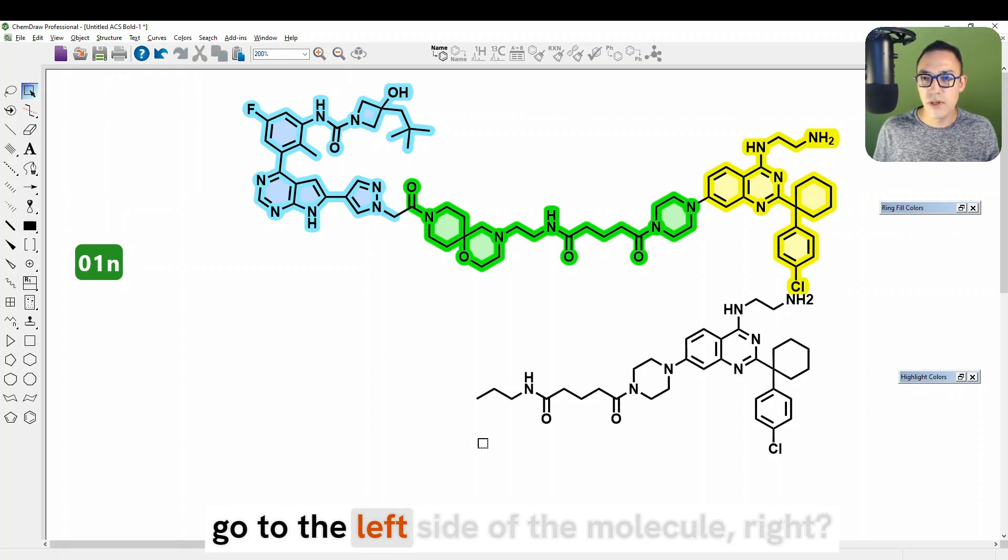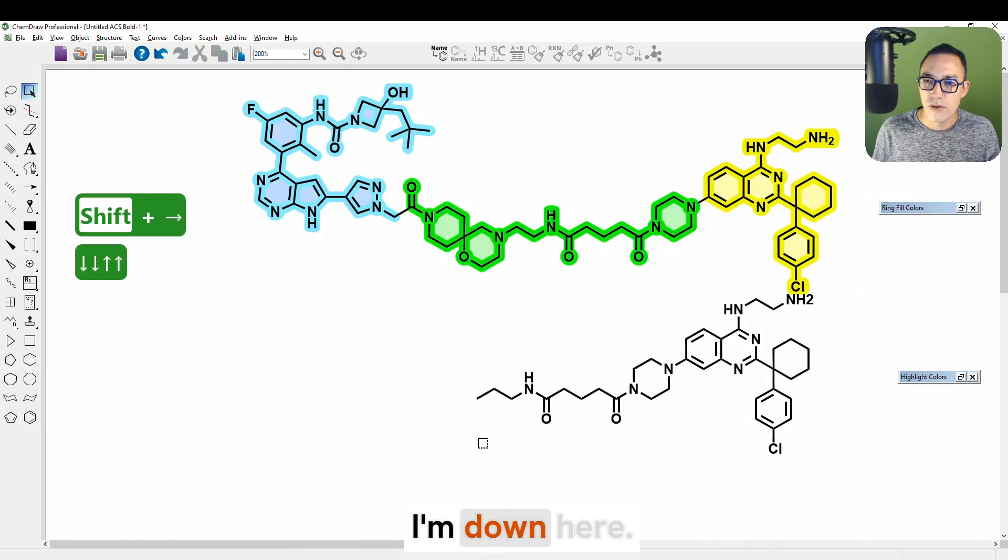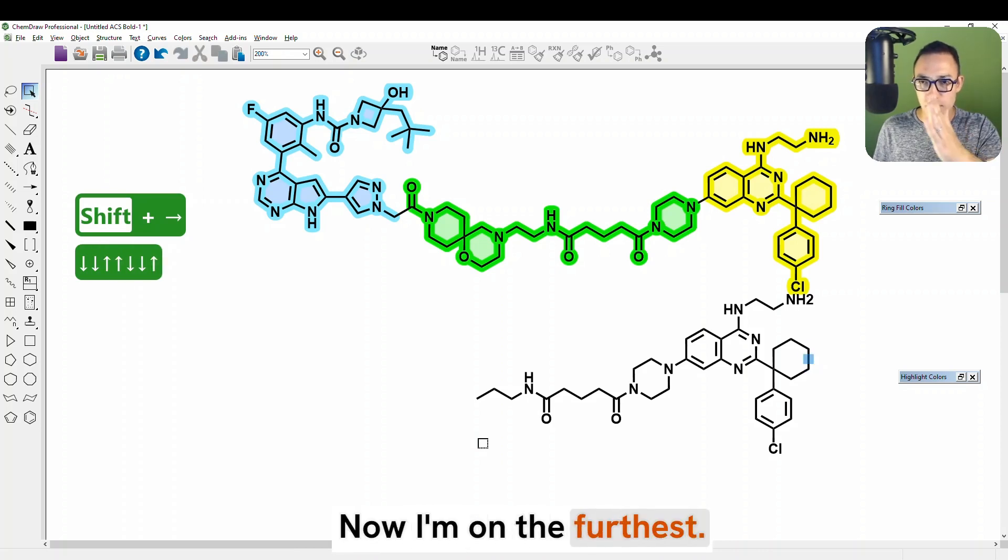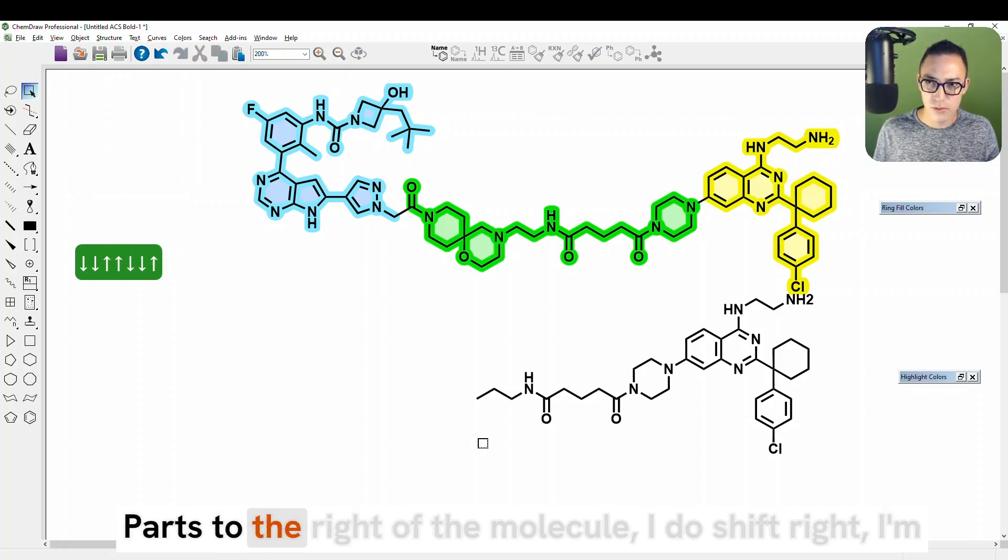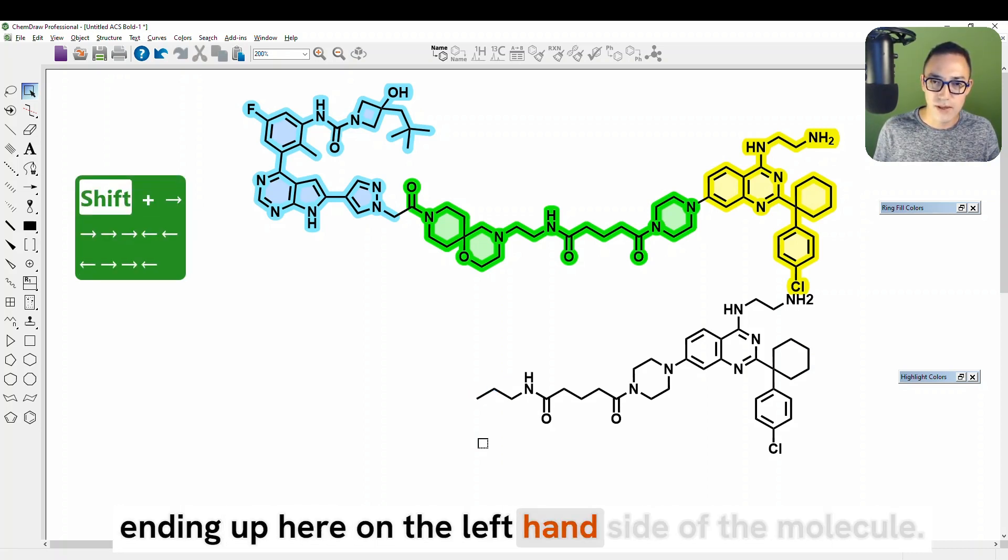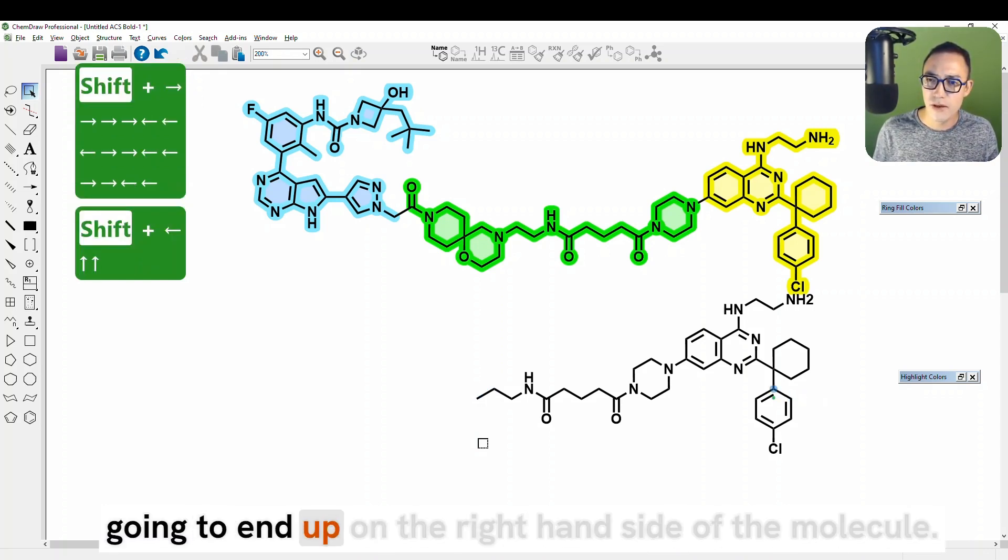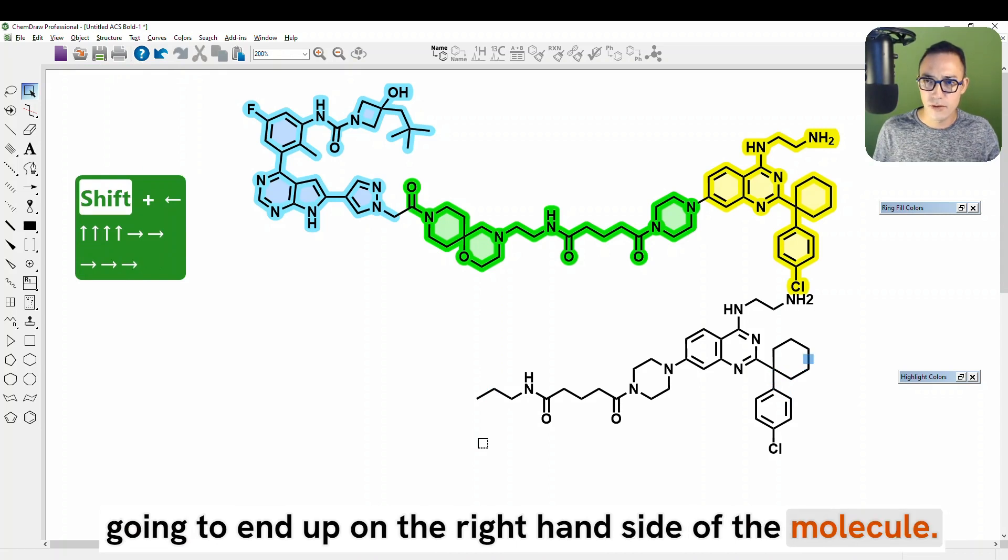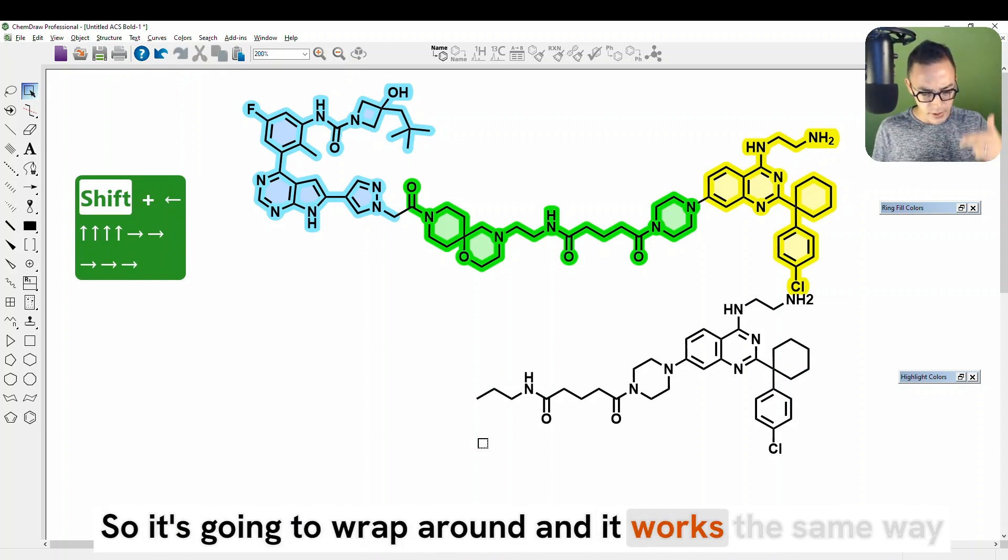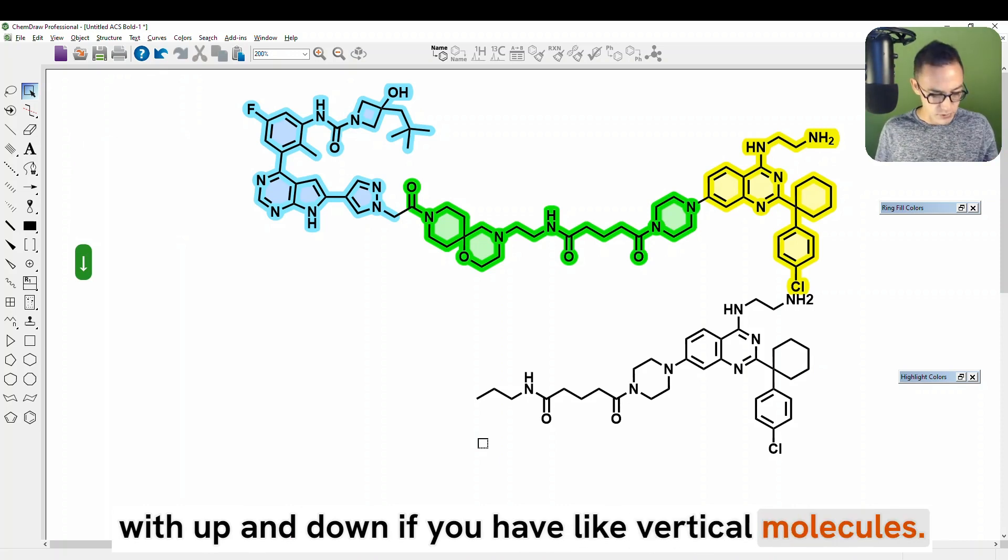And here I'm going to quickly go to the left side of the molecule, right? So I'm going to do shift right, I'm down here. Now I'm on the furthest part to the right of the molecule. I do shift right, I'm ending up here on the left hand side of the molecule. Same thing if I'm on the left hand side, I do shift left, I'm going to end up on the right hand side of the molecule. So it's going to wrap around and it works the same way with up and down if you have vertical molecules.